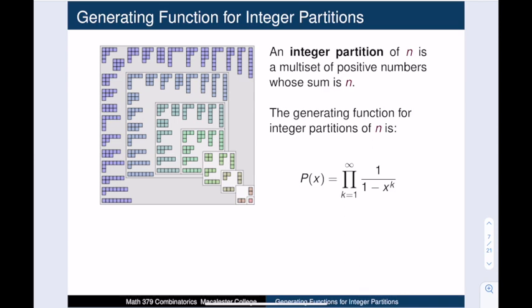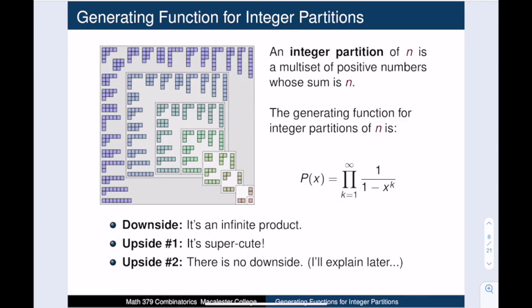We will show that the generating function for integer partitions of n is given by the following infinite product: multiply 1/(1 − xᵏ) for every positive integer k. This may seem unwieldy — multiplying an infinite number of functions — but it is actually a pretty simple and elegant function. We will see how to deal with the infinite product in a very straightforward way.